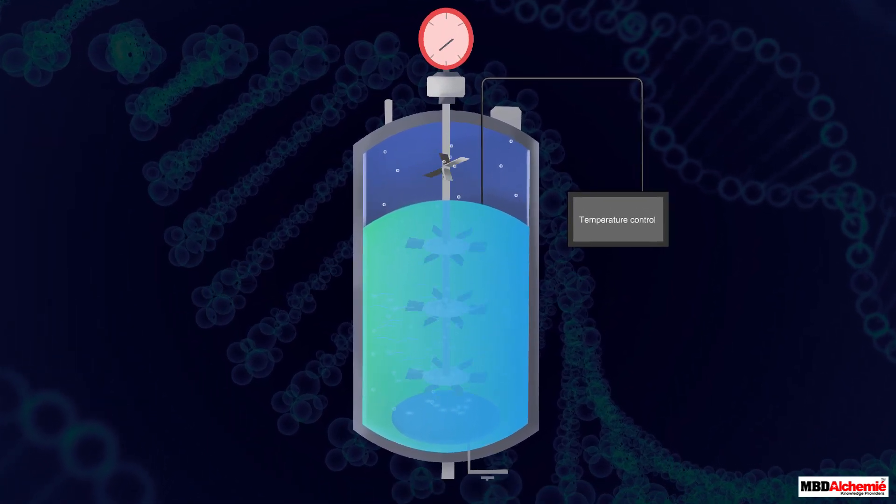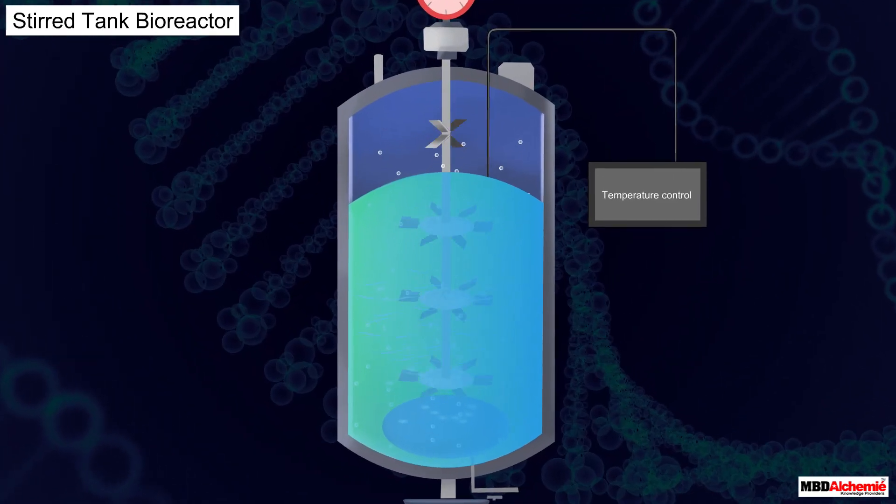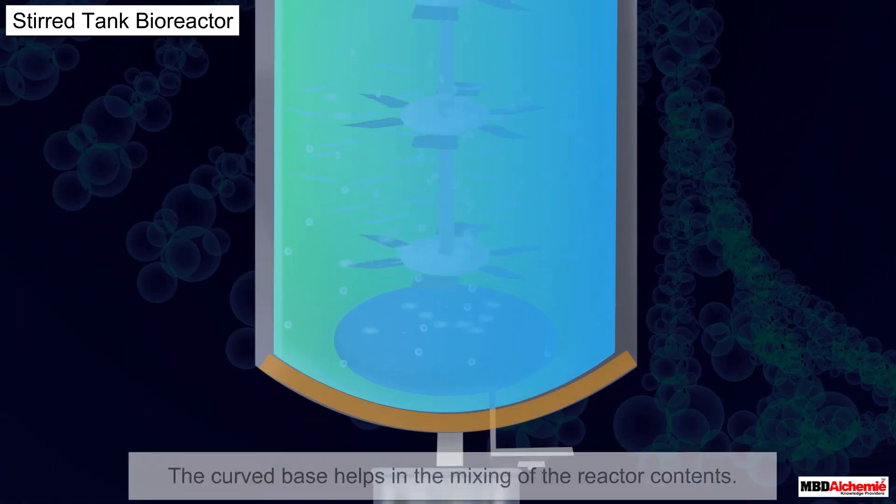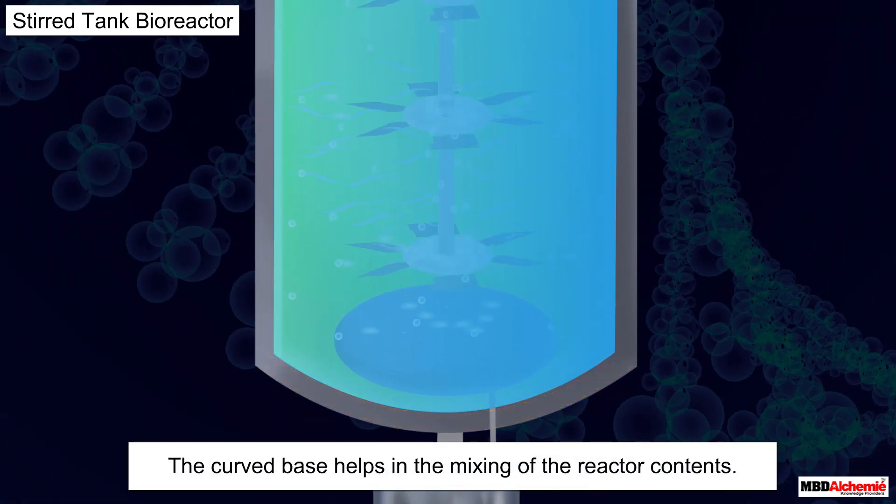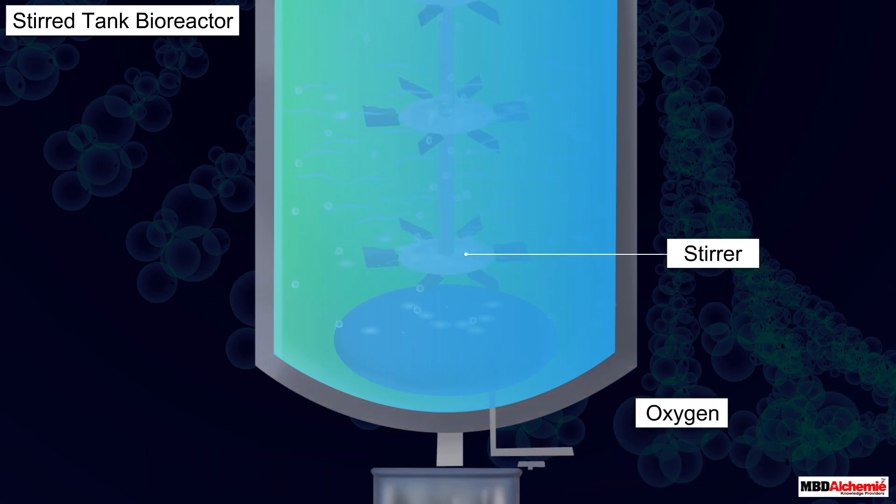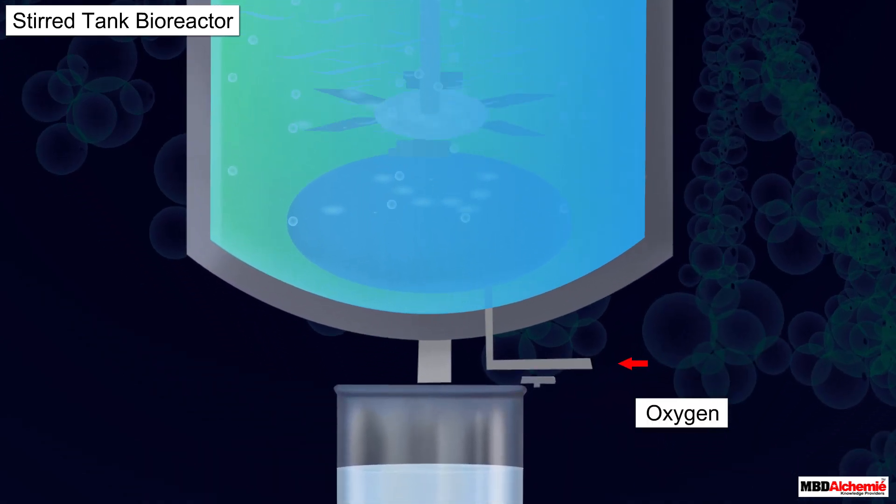A stirred tank reactor is usually cylindrical with a curved base. The curved base helps in the mixing of the reactor contents. The stirrer helps in mixing the contents as well as in providing the needed oxygen.